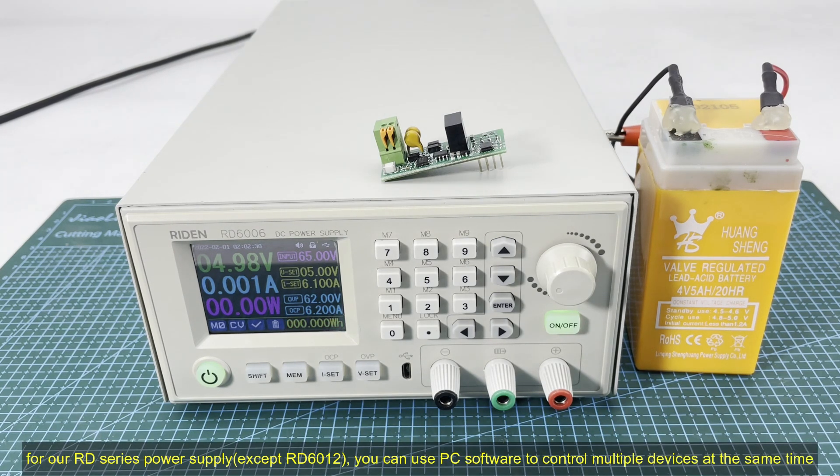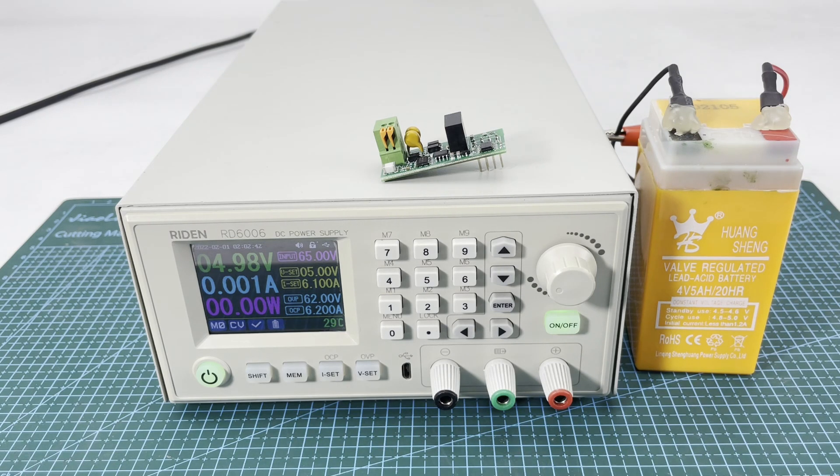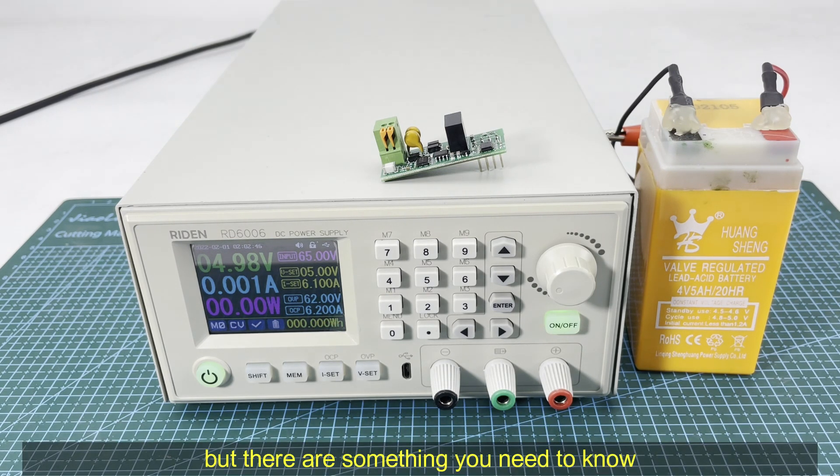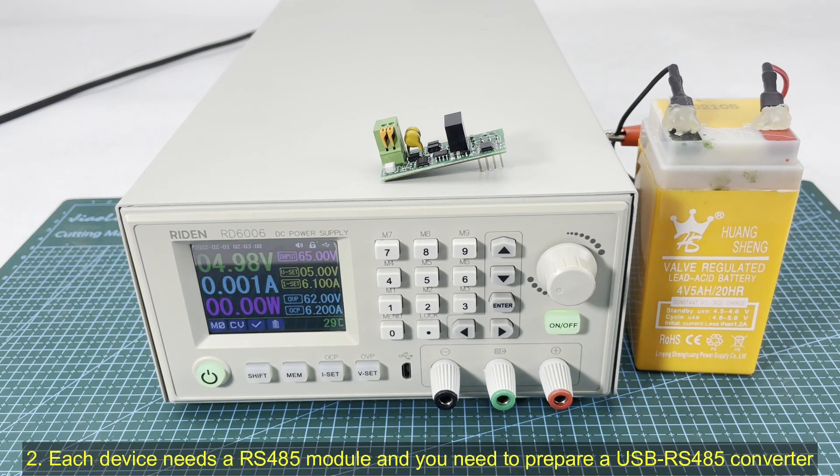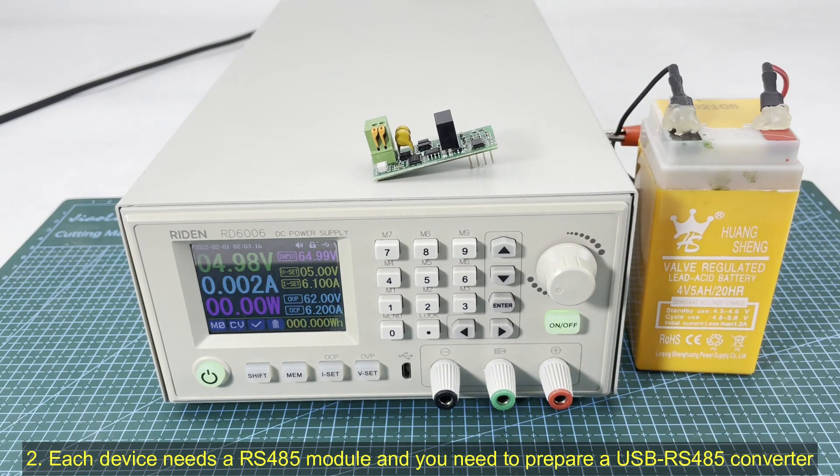For our RD series power supply, except the RD6012, you can use the PC software to control multiple devices at the same time. But there are some things you need to know. You can control 32 devices max at the same time. Of course they need to be the same model, for example you connect 32 RD6006 or 32 RD6012. And each device needs an RS485 module. This should be installed into the communication socket on each device, not just one single device.